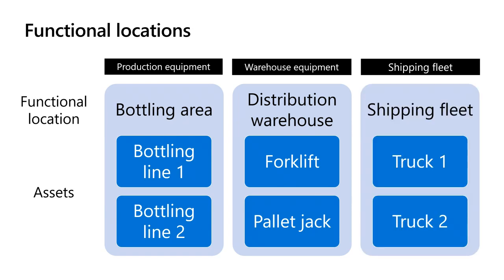In our shipping fleet, we wouldn't necessarily want to be tracking the truck as it moves all over if we're going to be performing all of our maintenance at our home location. So we could create a virtual location for the entire fleet of trucks and just call it shipping fleet. We could also create locations that relate to each of our main facility locations and then install our truck assets at the home facility — so we know that's where we'll do maintenance, procure materials to, and assign workers from.